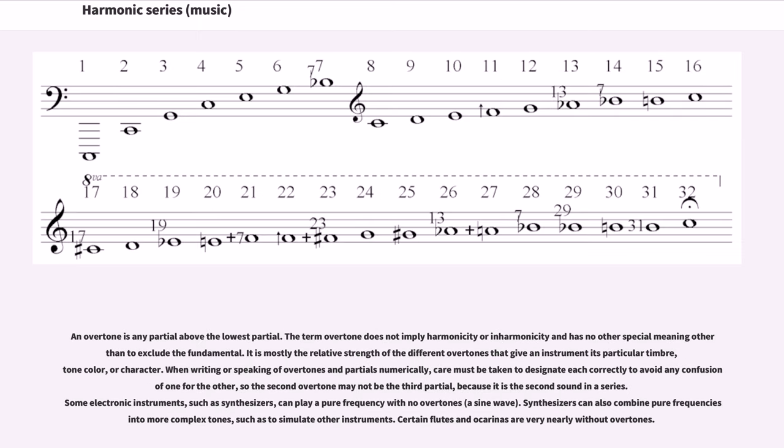An overtone is any partial above the lowest partial. The term overtone does not imply harmonicity or inharmonicity and has no other special meaning other than to exclude the fundamental. It is mostly the relative strength of the different overtones that give an instrument its particular timbre, tone color, or character. When writing or speaking of overtones and partials numerically, care must be taken to designate each correctly to avoid confusion. The second overtone may not be the third partial because it is the second sound in a series.